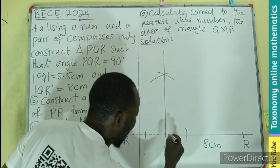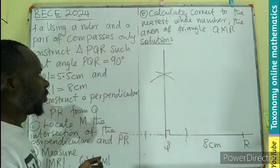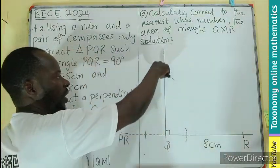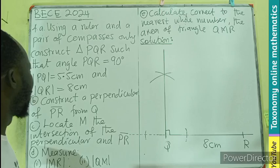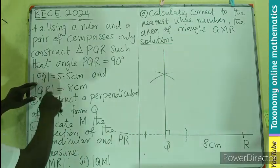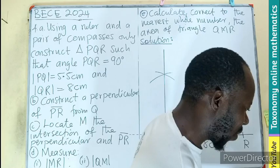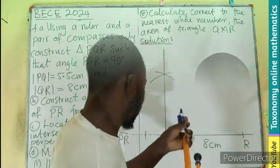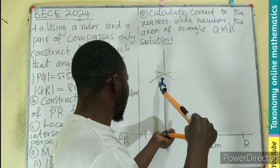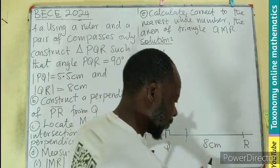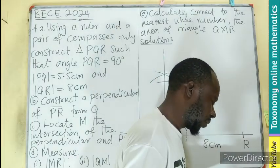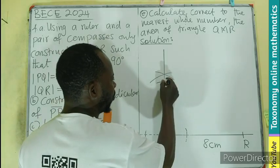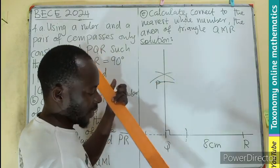With this we have our angle of 90°. Since we are dealing with triangle PQR, we have angle RQP. P is going to be on this perpendicular line. For the measurement of PQ, we stand the compass at Q and make the arc on the perpendicular line.